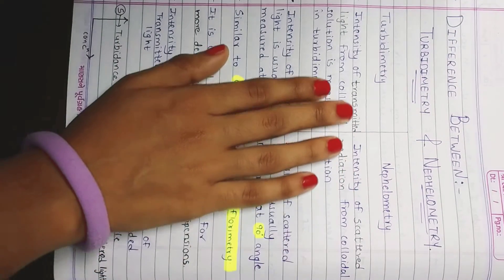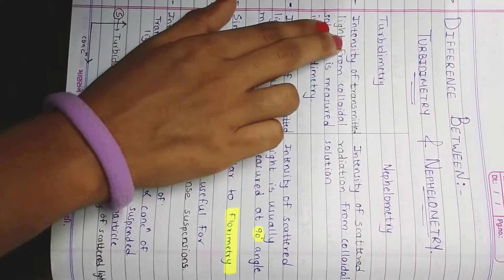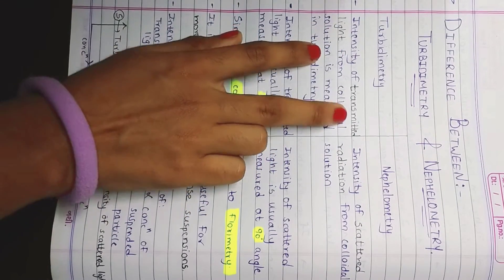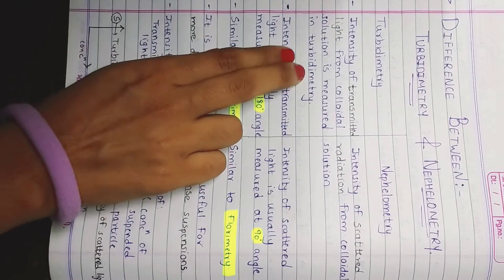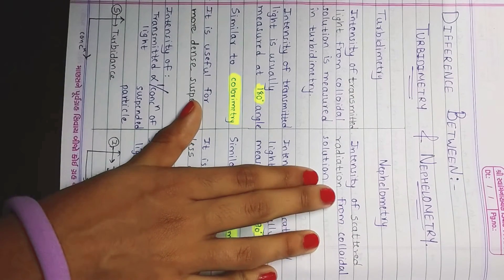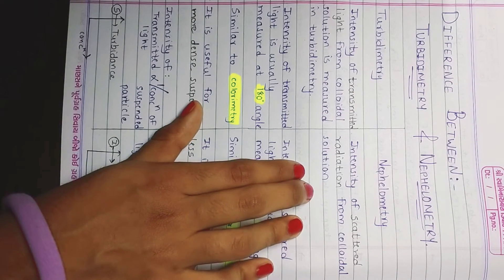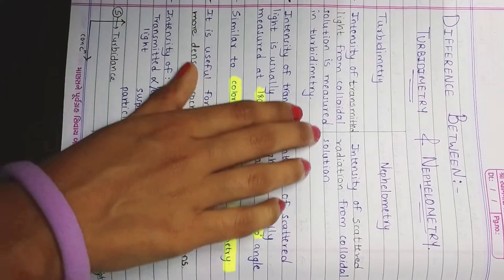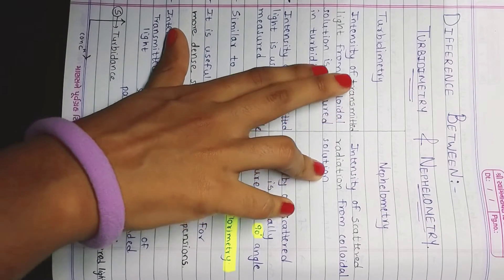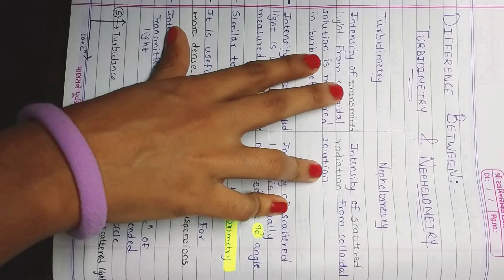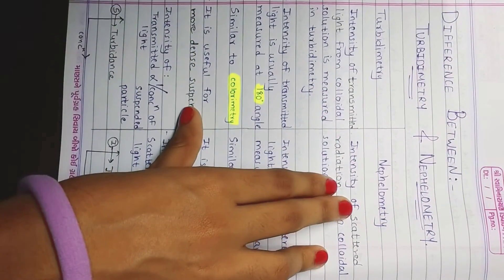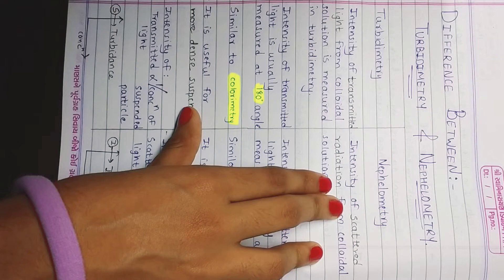First, what is turbidimetry? The intensity of the transmitted light from the colloidal solution is measured in turbidimetry, whereas the intensity of the scattered radiation from the colloidal solution is measured in nephelometry. The main difference, highlighted here, is that turbidimetry measures the intensity of transmitted light, whereas nephelometry measures the intensity of scattered radiation.